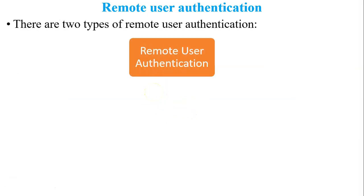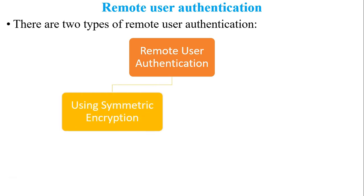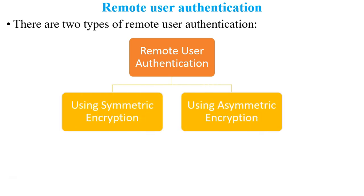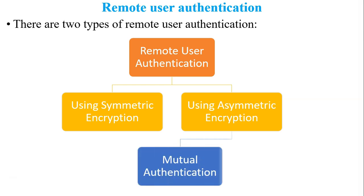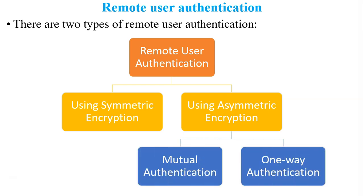There are two types of remote user authentication: the first is using symmetric encryption, and the second is using asymmetric encryption. Remote user authentication using asymmetric encryption has two methods: mutual authentication and one-way authentication.